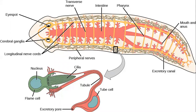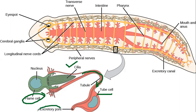Here is also an enlarged view of the excretory system. The flame cells move fluid through the excretory tubule, tubule cells, and ultimately to the excretory pore, which is named the nephridiopore.